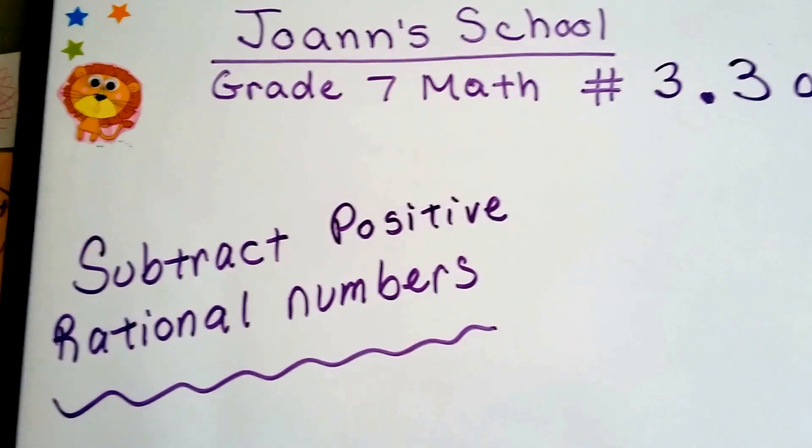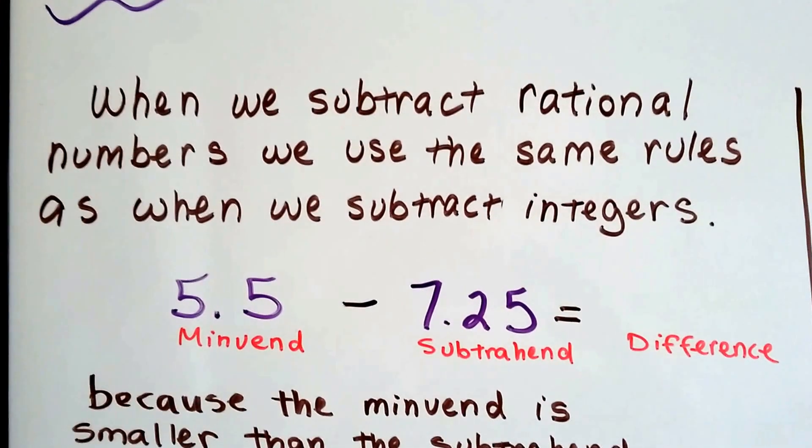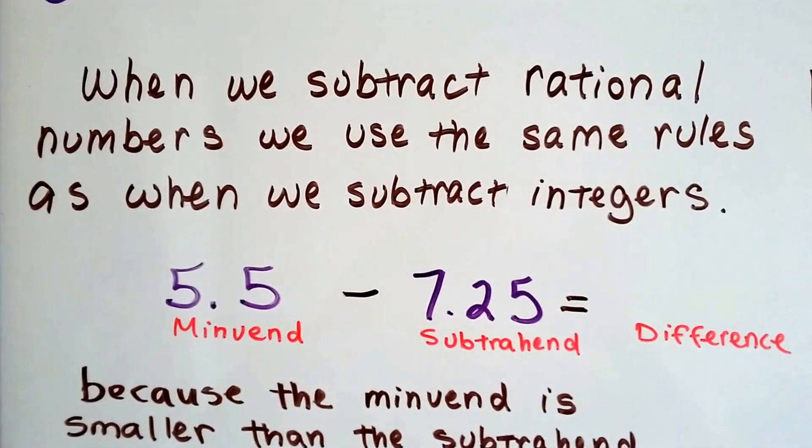Grade 7 math number 3.3a, subtract positive rational numbers. When we subtract rational numbers, we use the same rules as when we subtract integers.